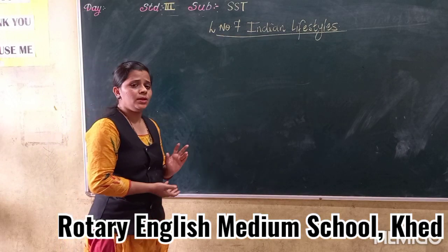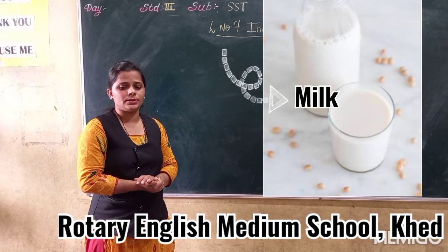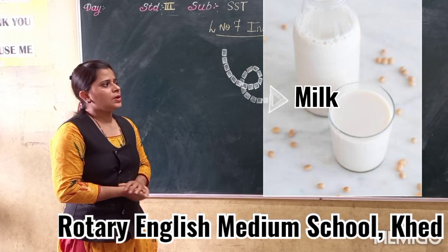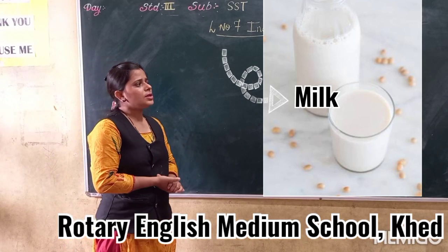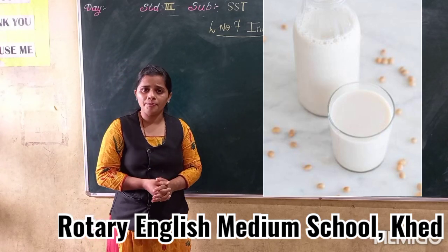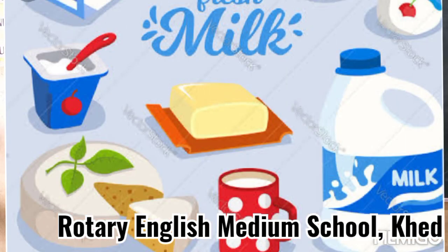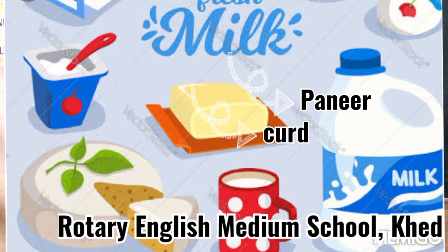Now let's go to the next topic — milk. Milk is also called a complete food. India prefers milk and milk products. Milk products include paneer, curd, butter, etc.